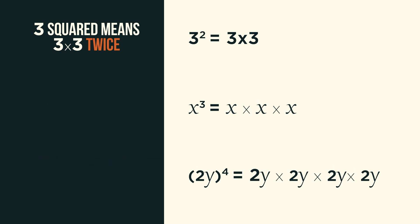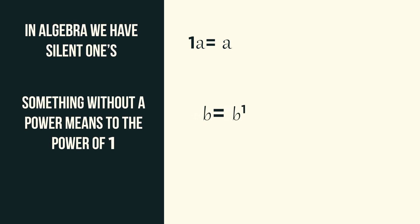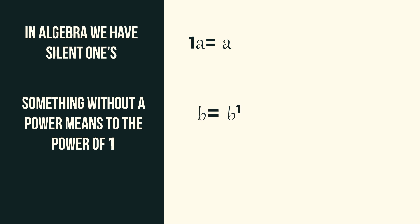You know how in algebra we have silent ones? So we don't write 1a, we just write a. Something without a power, so b for example, really means b to the power of 1. But the 1 is silent so we don't write it.